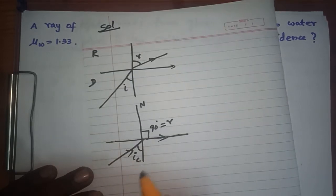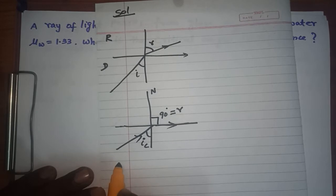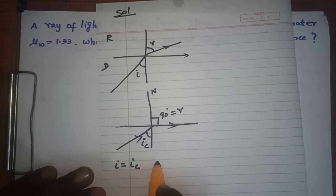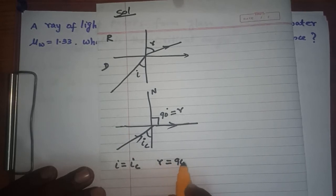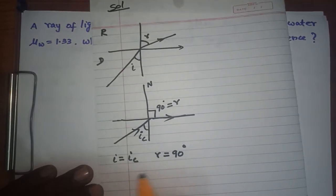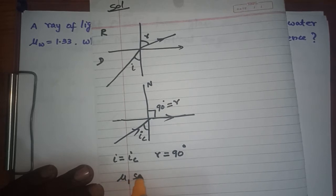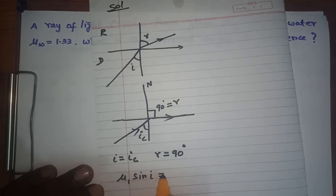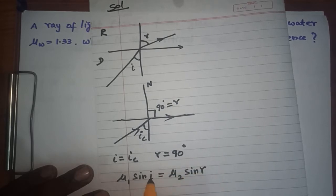Now the angle between the normal to the refracted ray is your angle of 90 degrees, which is equal to r. The angle at this point of incidence you call the critical angle. Your angle of incidence is equal to the critical angle of incidence when your refracted angle is equal to 90 degrees.